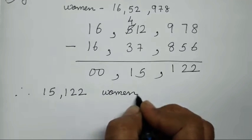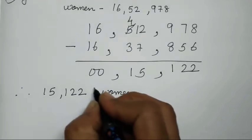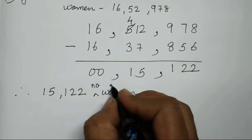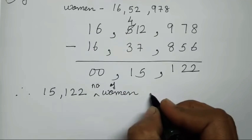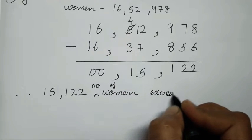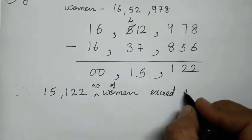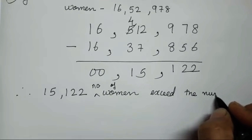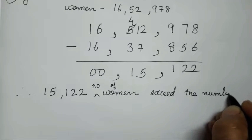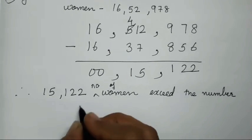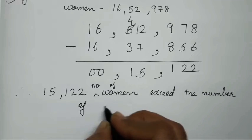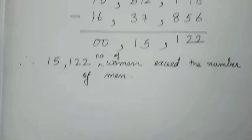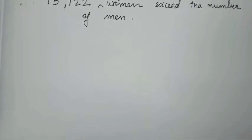Therefore, the number of women exceeds the number of men by 15,122. Now let's solve the fourth sum.